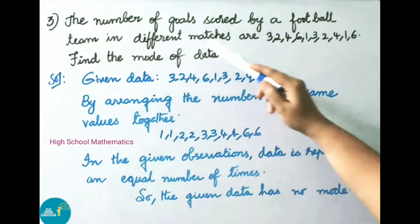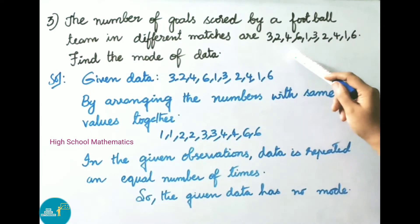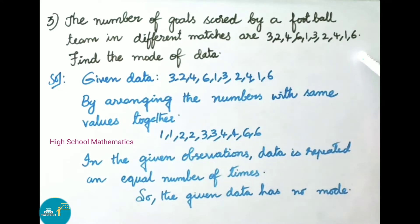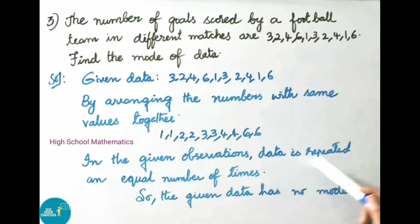Question 3: The number of goals scored by a football team in different matches are 3, 2, 4, 6, 1, 3, 2, 4, 1, and 6. Find the mode. Arranging with same values together: 1 appears 2 times, 2 appears 2 times, 3 appears 2 times, 4 appears 2 times, and 6 appears 2 times. Since all observations are repeated an equal number of times, the given data has no mode.